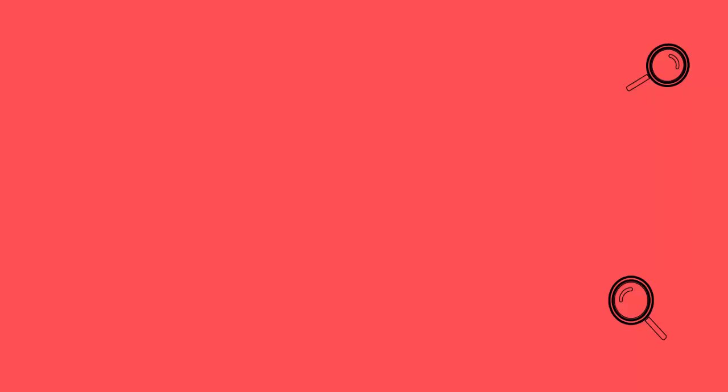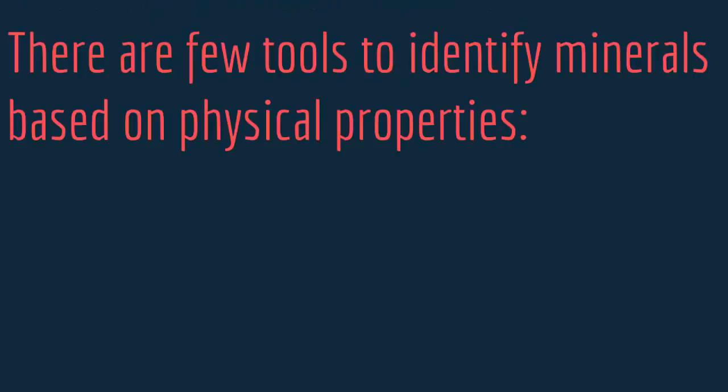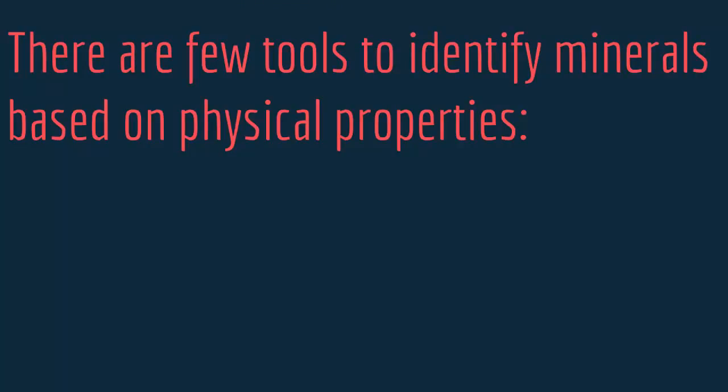We are not going to identify each mineral and state their properties — there are big charts that do that. What we are going to explore are the physical tools and properties that can help you identify a mineral. So, how are minerals identified using physical properties? There are a few tools: optical properties, crystalline shapes, mineral strength, density and specific gravity, and other tools like taste, look, and feel. All these are physical properties that can aid you in identifying a mineral, because each mineral has its own unique physical properties.